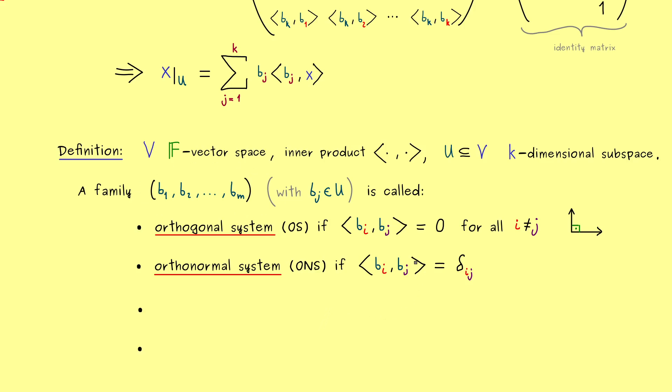Namely we get orthogonal bases OB and orthonormal bases ONB. So we have exactly the same thing as before, we just add the information that we have a basis as well. And then we get the most important notion, namely orthonormal bases for a subspace U. Now this notion should not be completely new to you.